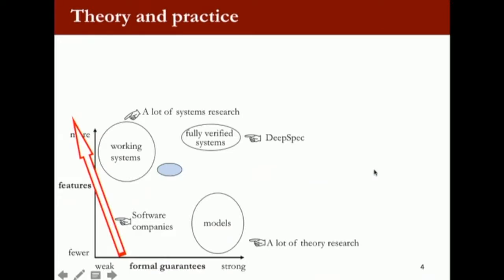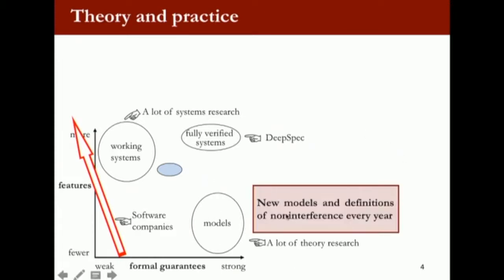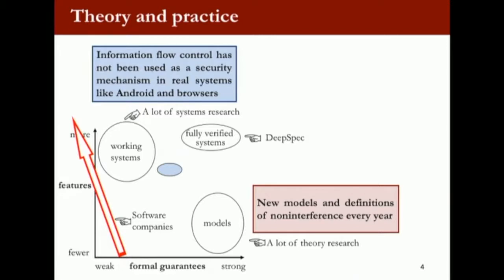In terms of information flow, what's interesting is that on the theory side, every year you see many papers published about new models and definitions about non-interference, which is a key security property about information flow control systems. Numerous papers appear every year. But in reality, information flow has not been used as a real or practical security mechanism in any real systems. While Android and Chrome got pushed out fairly recently, the only thing they could think of is still using permission systems and access control systems — they really didn't think about having information flow as part of their security enforcement.